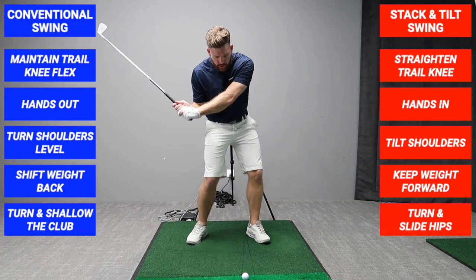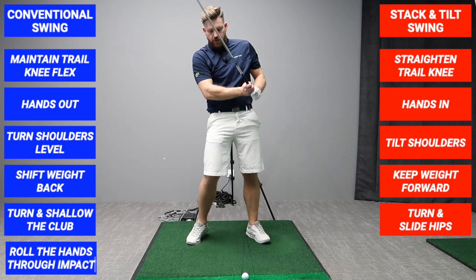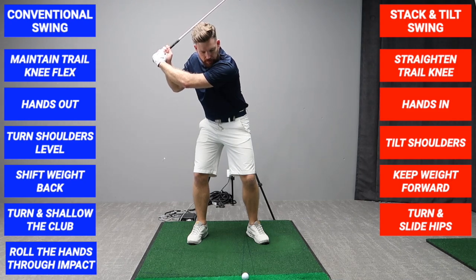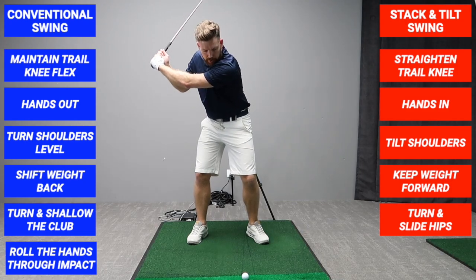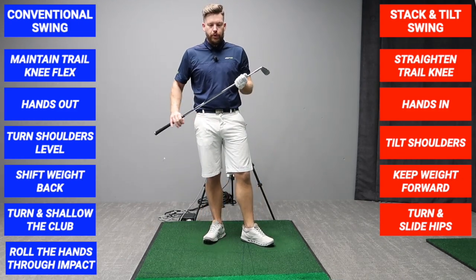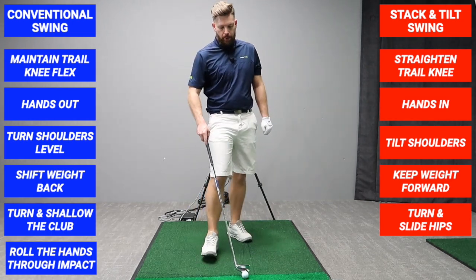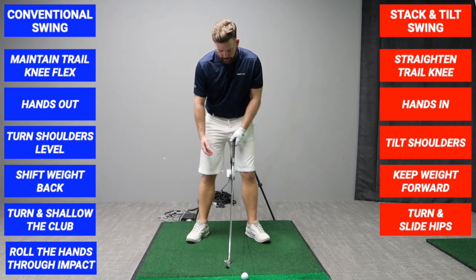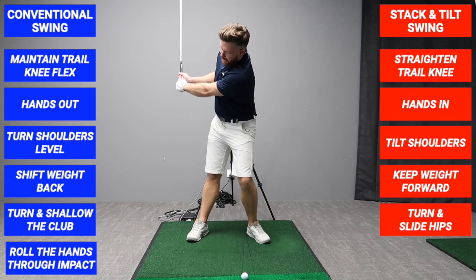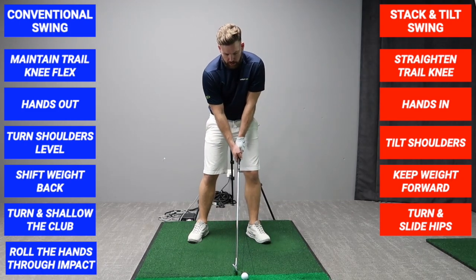In the conventional swing you're told to turn, shallow, then try to release the hands and time the golf ball - it's really hard to do. You've moved off the ball, you're trying to shallow the club, trying to roll the hands and turn - so many movements to time. Whereas in the stack and tilt swing, by opening the feet, changing knee flex, moving hands inwards, our centers are already in front of the ball - a much easier way to strike it.